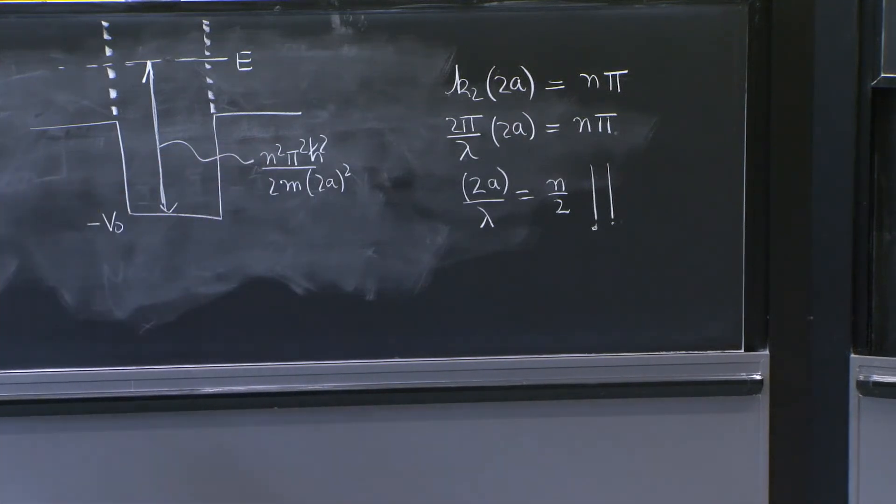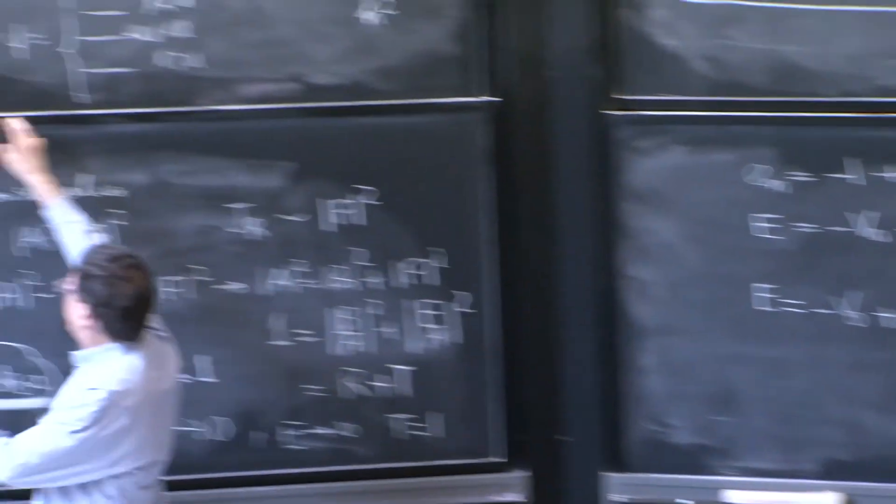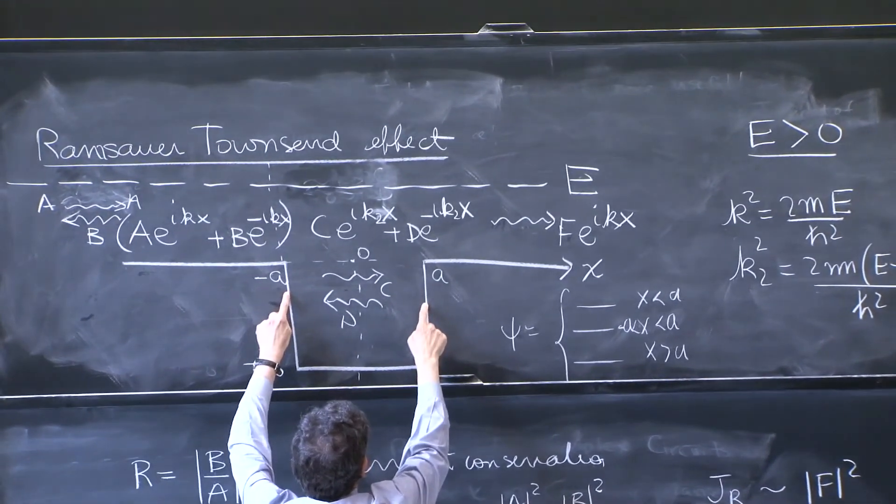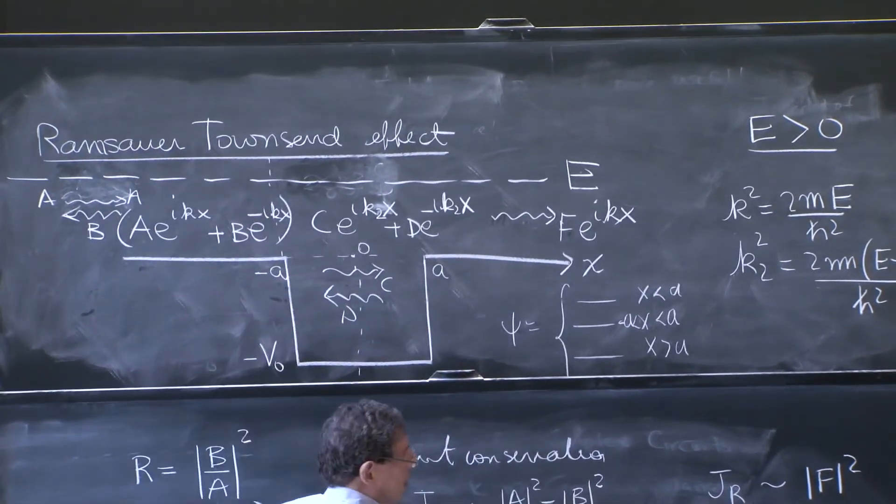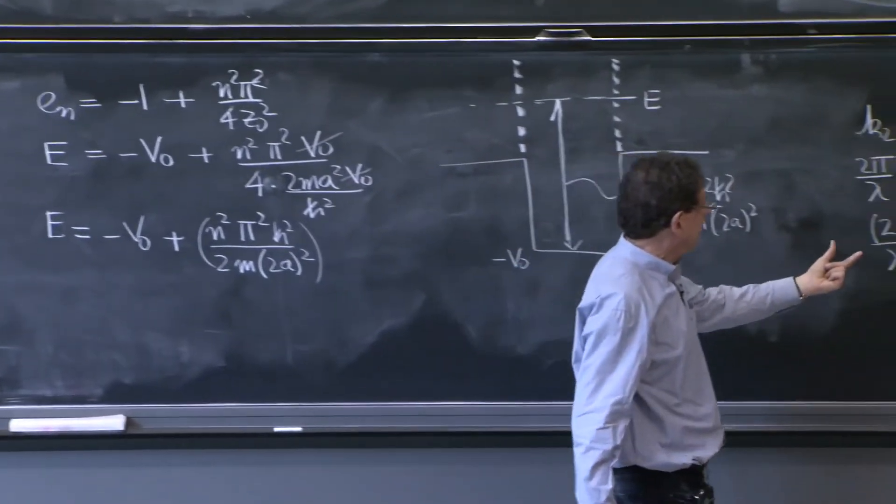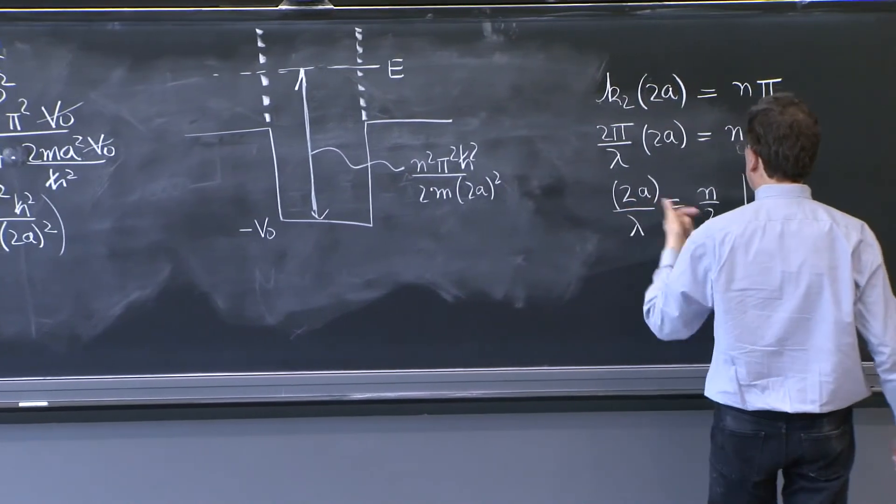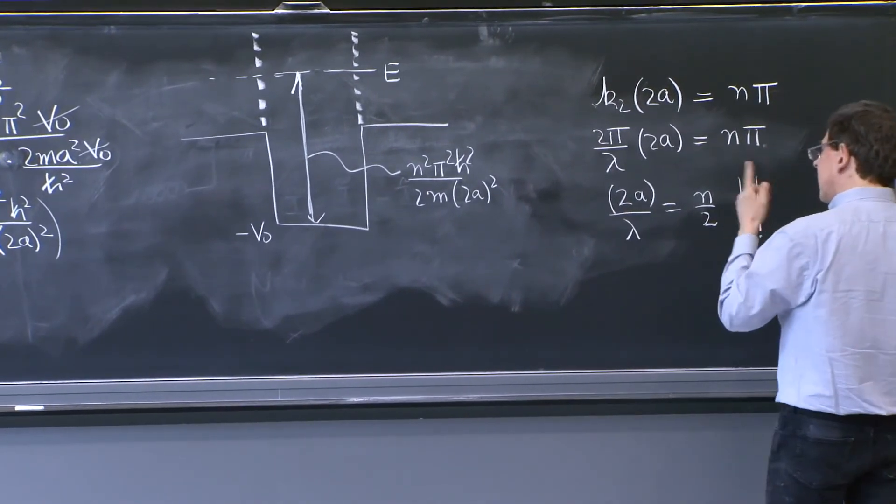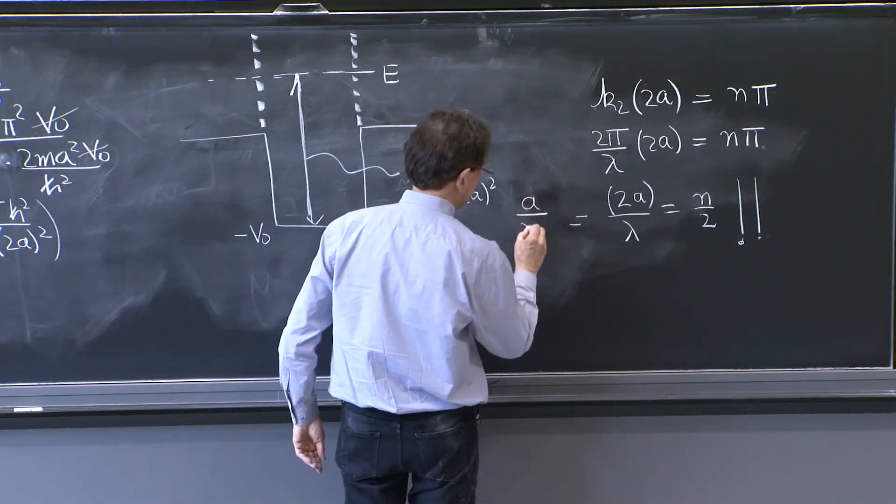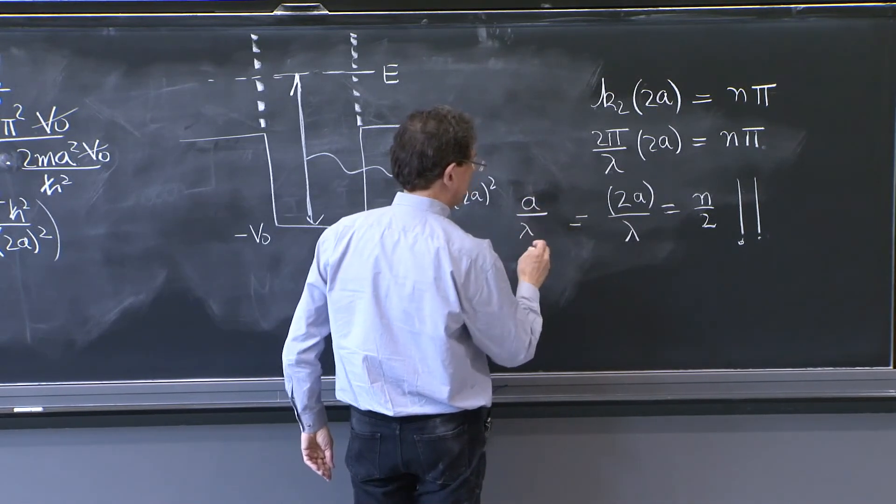it says that the de Broglie wavelength that you have in this region is such that it fits into 2a. Let me write it yet in another way.